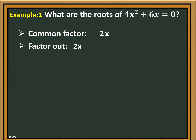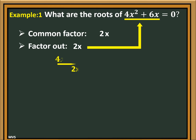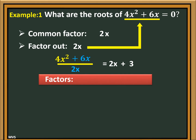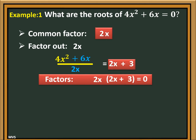Next, factor out by dividing the common factor from 4x squared plus 6x. 4x squared divided by 2x is equal to 2x. 6x divided by 2x is equal to 3. Therefore, the factors are 2x times the quantity 2x plus 3, is equal to zero.